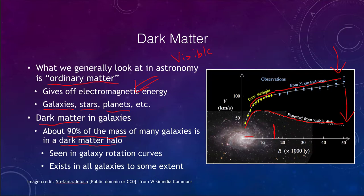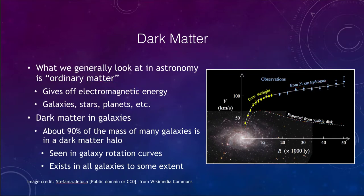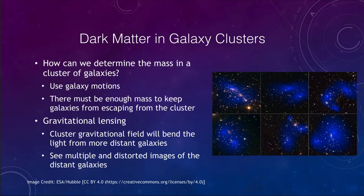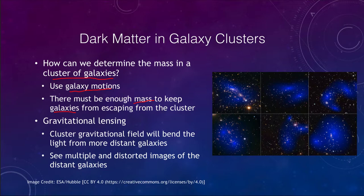The only way we can explain that rotation curve is through a lot more matter within the galaxy, and we see this in most or all galaxies. How about in clusters of galaxies? We can use the motions of the galaxies — there must be enough mass within the galaxy cluster to keep the galaxies from escaping. Otherwise, clusters and superclusters would not remain; they would disappear over time, and galaxies would just be spread out all over the universe.